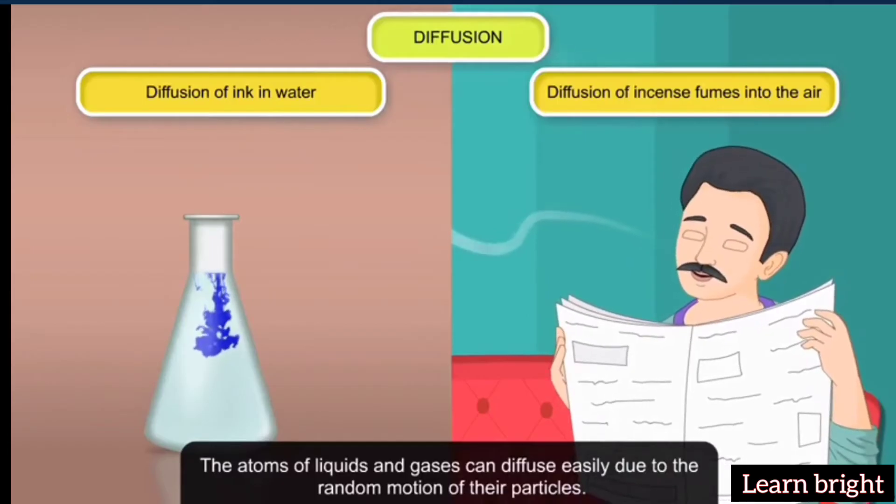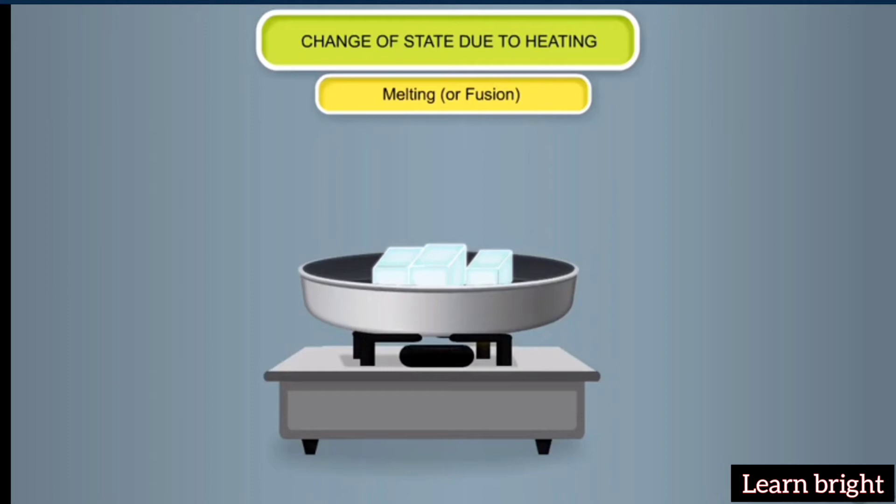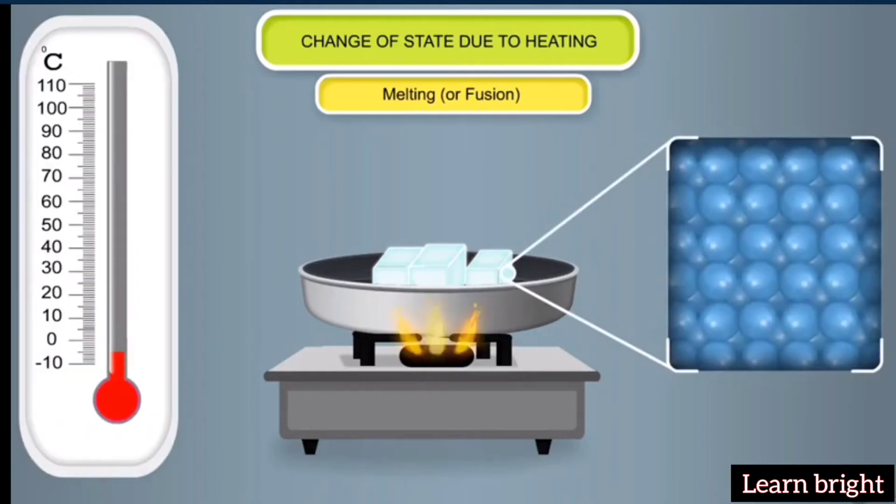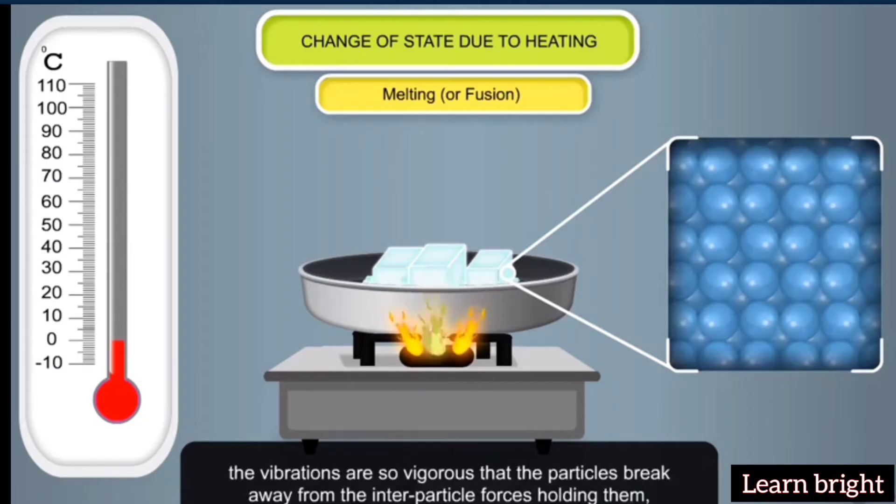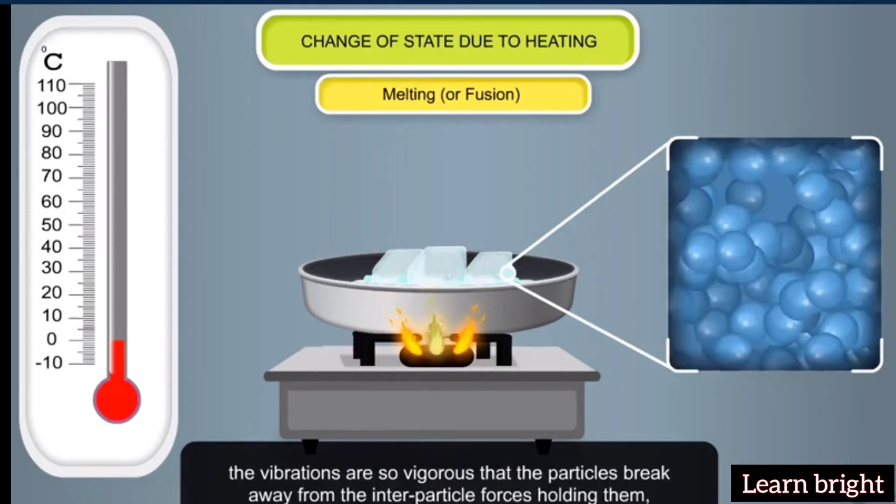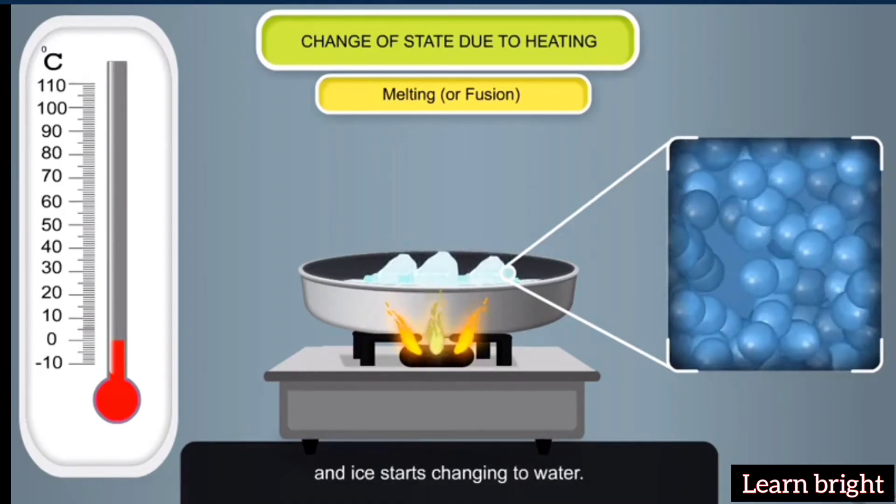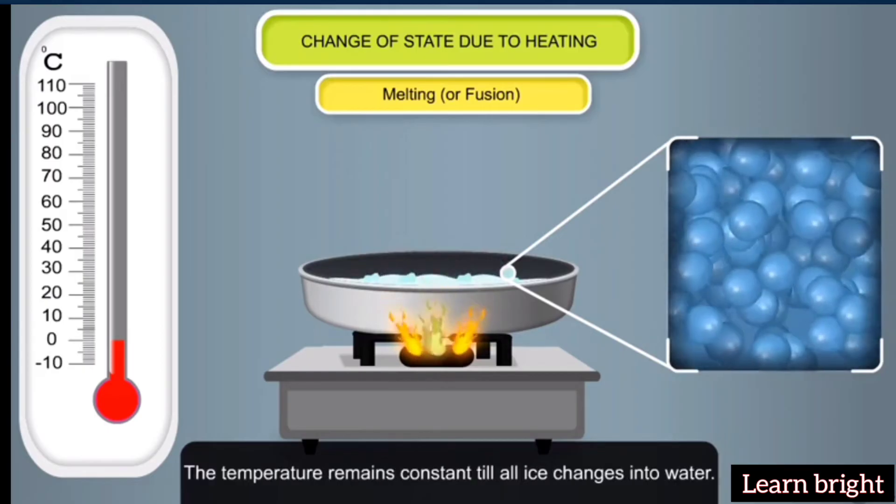Change of state due to heating: When ice is heated, its temperature starts rising because its particles start vibrating more vigorously. When its temperature reaches its melting point, the vibrations are so vigorous that the particles break away from the inter-particle forces holding them, and ice starts changing to water. The temperature remains constant till all ice changes into water.